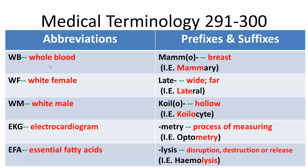Whole Blood. WF — White Female. WM — White Male. EKG — Electrocardiogram. EFA — Essential Fatty Acids. And so now for the prefixes and suffixes.